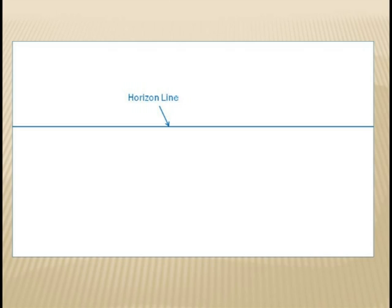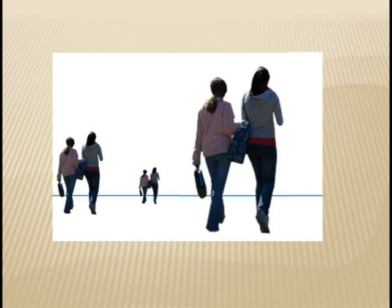The horizon line is the eye level of your viewer. If you were three feet tall, everything at three feet would line up on the horizon line. If you were six feet tall, everything at six feet would line up on the horizon line.